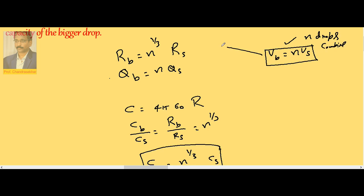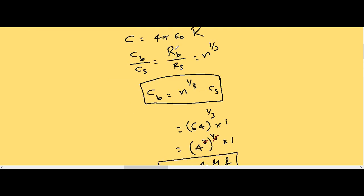From this we can prove this one. Qb is n into Qs, but in case of capacity, no use with this charge. Substitution gives us capacity of the big drop is n to the power of 1/3 into the capacity of the small drop.